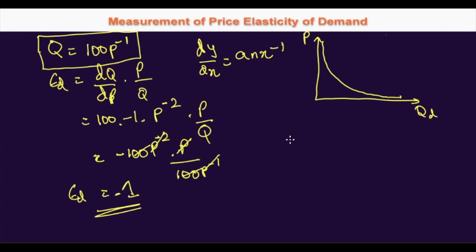We can generalize this rule to: when Q equals alpha P to the power minus n, the elasticity of demand will always be minus n. This would be useful for your multiple choice questions to answer faster.